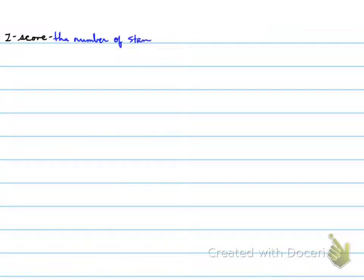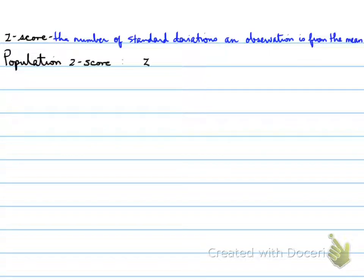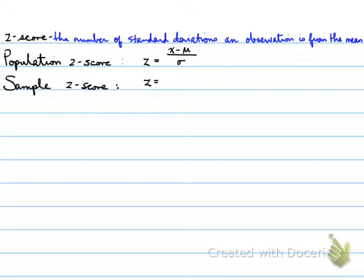A z-score is the number of standard deviations an observation is from the mean. For a population z-score, z equals the value minus the mean divided by the standard deviation. The sample z-score is the same: the value minus the mean divided by the standard deviation.